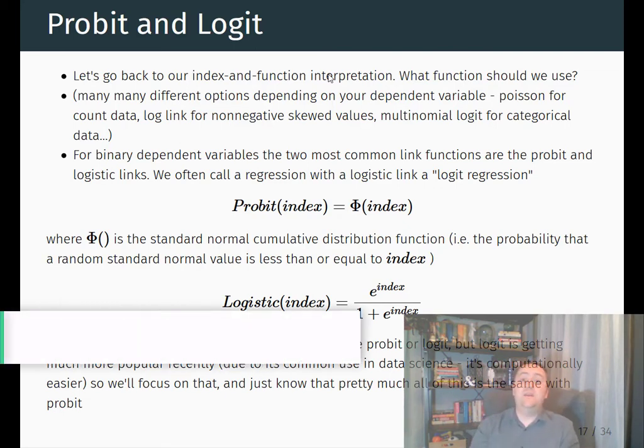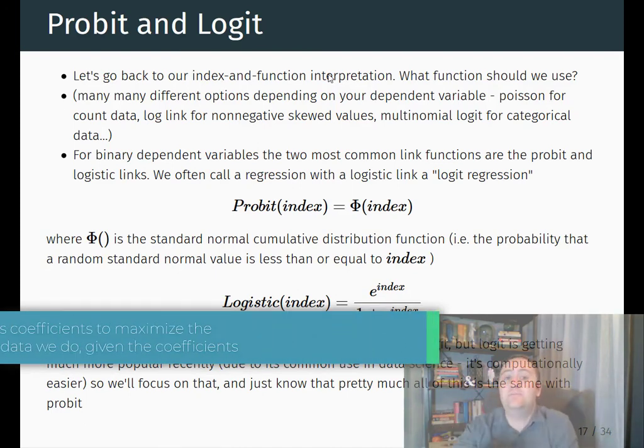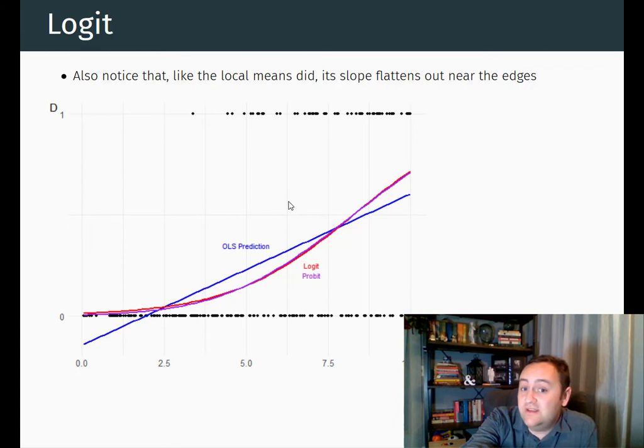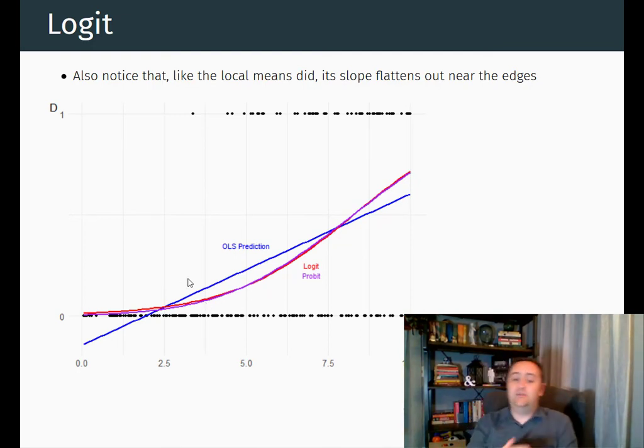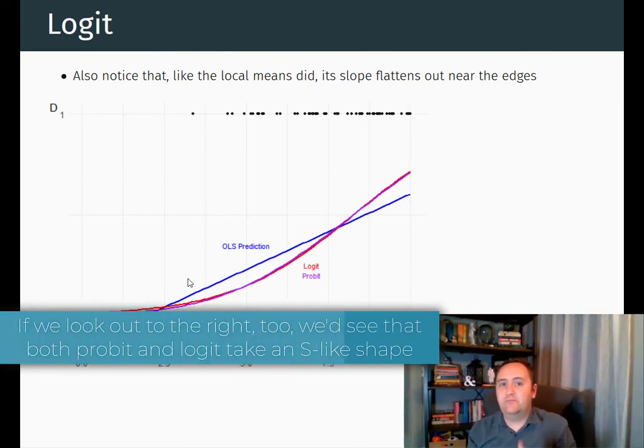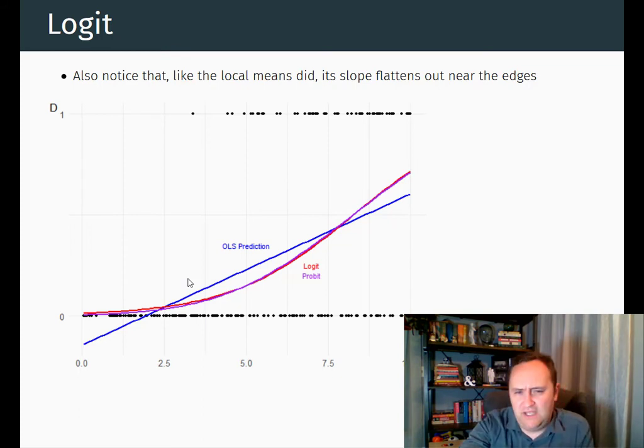So these are the link functions that we can use. If we set up these link functions, we can fiddle around with those coefficients until we find coefficients that predict the outcome as well. And those predictions will never be outside the range of zero to one. Here's an example looking at the predictions from logit and probit as opposed to OLS. So in the two things that we wanted it to do. So first of all, it does not predict below zero. And also, as we get closer to the edges, it curves away and avoids going away. So the slope varies across the range of x. Another thing you can notice here is that the predictions from probit and logit are basically the same. That's pretty common most of the time. Usually it does not matter too much whether you choose probit or logit.